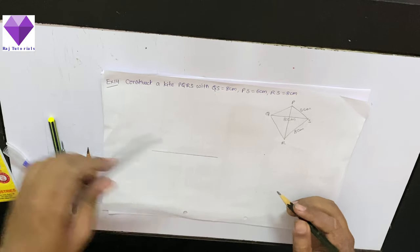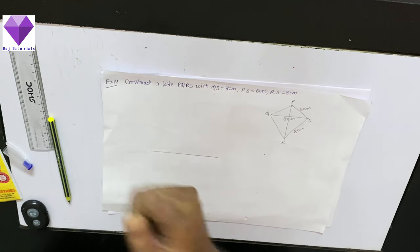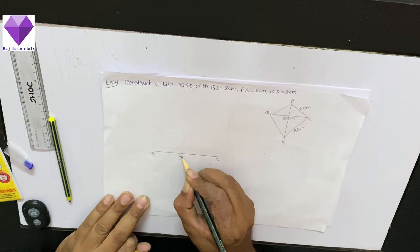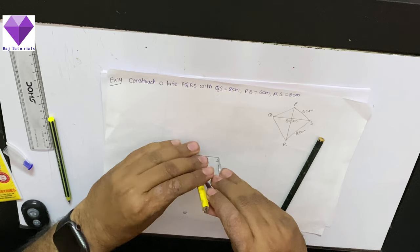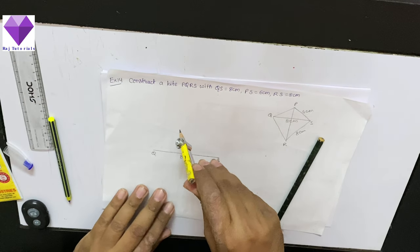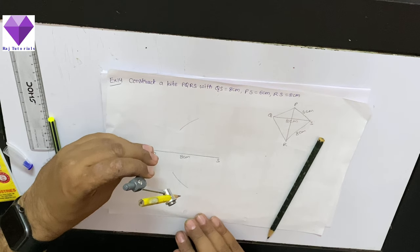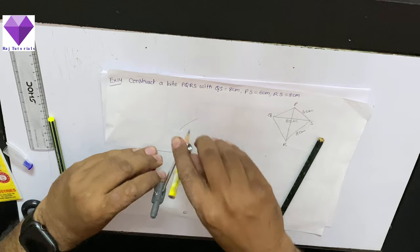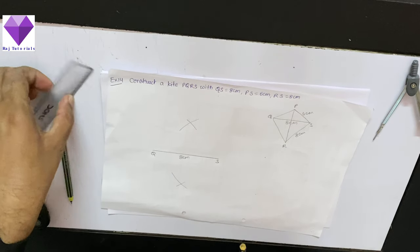Now, the next thing which I have to do is draw perpendicular bisector of this. I need to draw perpendicular bisector of QS, so more than half, one arc up, one arc down. Same way with QS center and same radius, one arc down, one arc up. Now I will be joining these two points and elongating that.